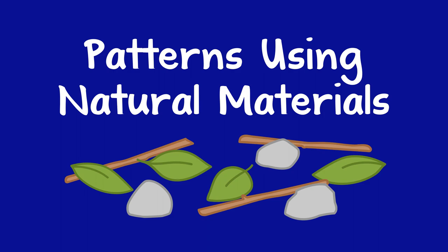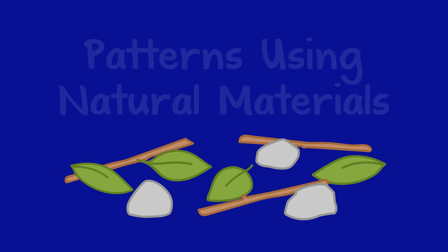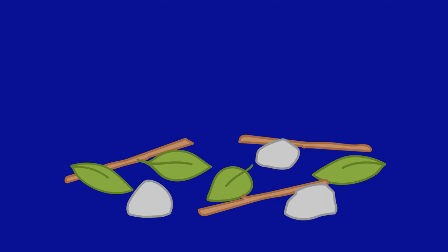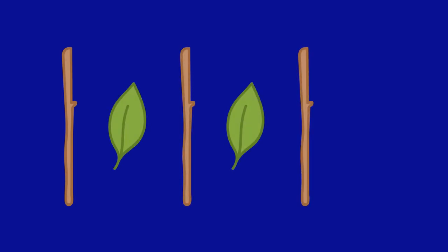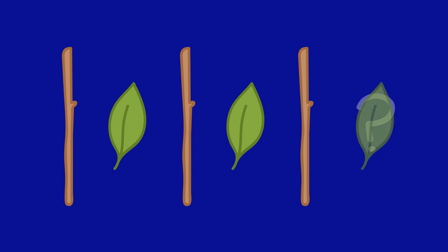To help a child understand patterns, you can use natural materials. You can place the objects in front of the child in a repeating pattern, such as stick, leaf, stick, leaf, stick. Then you can ask, what comes next? And the child can place a leaf.